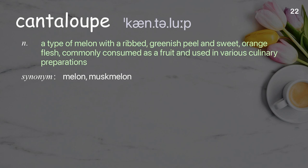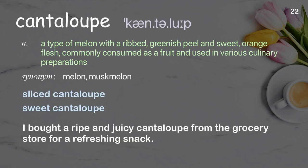Cantaloupe: A type of melon with a ribbed, greenish peel and sweet, orange flesh, commonly consumed as a fruit and used in various culinary preparations. Examples: Sliced cantaloupe. Sweet cantaloupe. I bought a ripe and juicy cantaloupe from the grocery store for a refreshing snack.